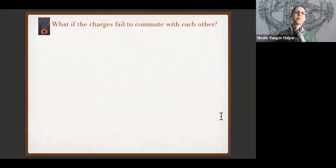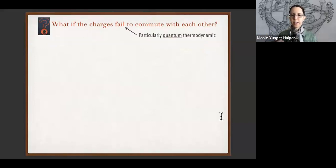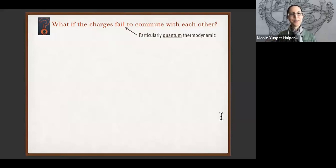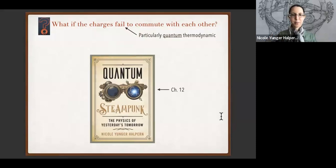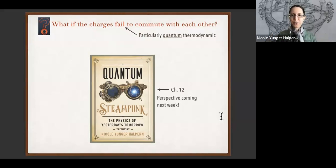Now, what happens if the charges fail to commute with each other? This question is a particularly quantum thermodynamic question because non-commutation of operators is a hallmark of quantum theory. This question has engendered a small growing subfield. If you're interested in the backstory, it's in chapter 12 of a book I published last year for the general public. My group has also written a perspective for Nature Reviews Physics on this subfield that will be on the archive this coming week.